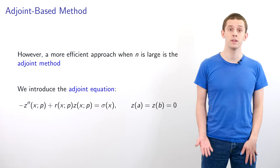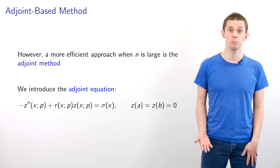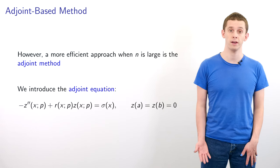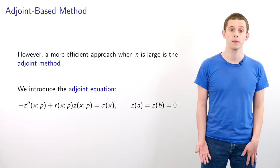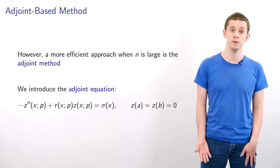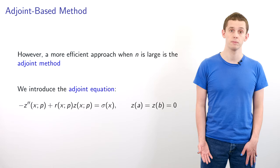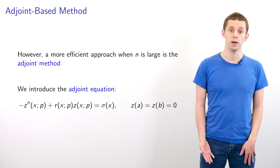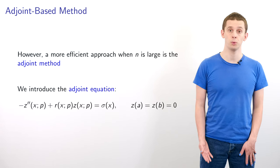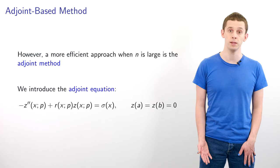If n is large then a more efficient approach is to use the adjoint method. To employ this method we introduce the adjoint equation for a function z(x;p). To begin with this equation will appear to come from thin air, however we'll see why it's important in a moment. We have: -z'' + rz = σ, with Dirichlet boundary conditions z(a) = z(b) = 0.